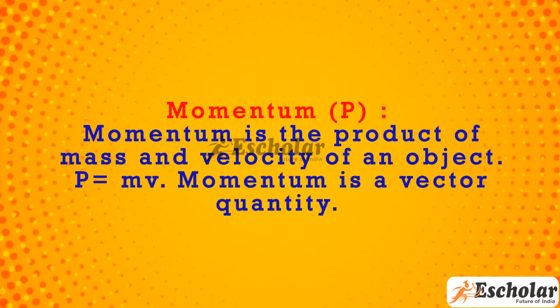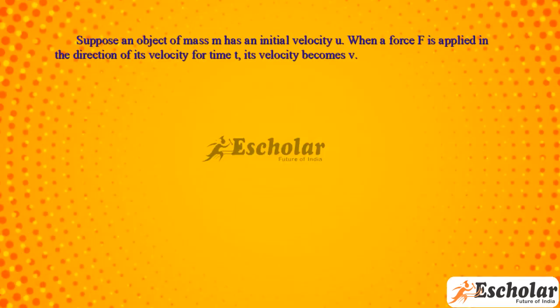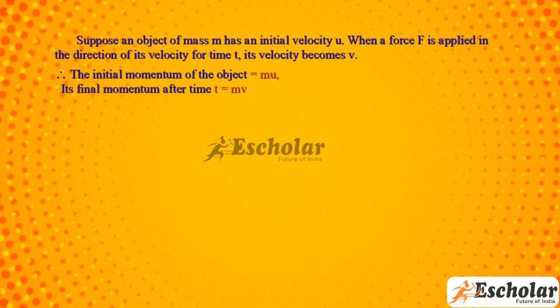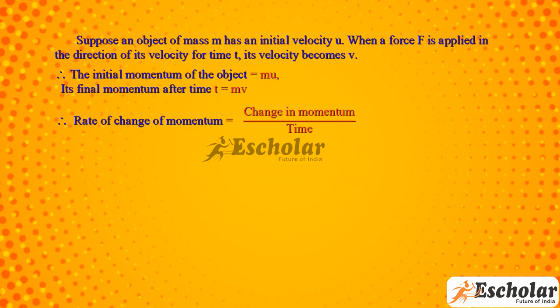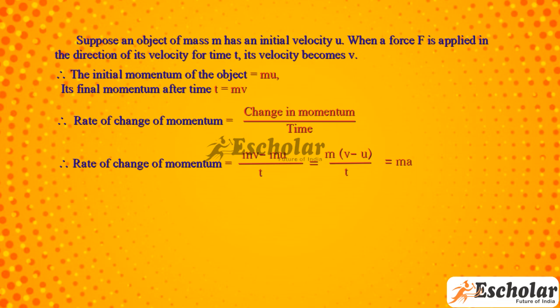Momentum (P) is the product of mass and velocity of an object: P = MV. Momentum is a vector quantity. Suppose an object of mass M has an initial velocity U. When a force F is applied in the direction of its velocity for time T, its velocity becomes V. The initial momentum equals MU and the final momentum equals MV. The rate of change of momentum equals change in momentum divided by time.